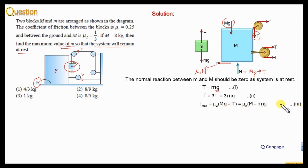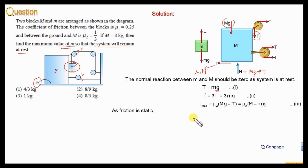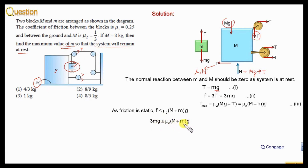Since friction is static, the real value of friction force should be less than or equal to the maximum possible value. That means f should be less than or equal to mu2 multiplied by (capital M plus small m) multiplied by g. Substituting small f equal to 3mg and cancelling g, we get: 3m minus mu2 times m is less than or equal to mu2 times capital M. Taking small m as common: m multiplied by (3 minus mu2) is less than or equal to mu2 times capital M.